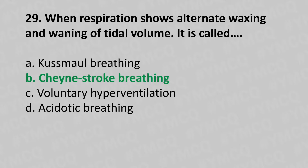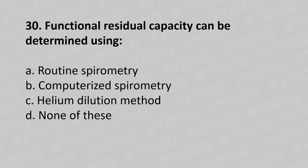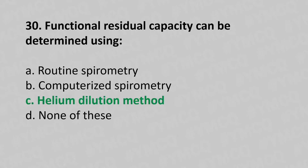Now let's move to question number 30. Functional residual capacity can be determined using. Option A: Routine spirometry. Option B: Computerized spirometry. Option C: Helium dilution method. Option D: None of these. And the answer is Option C, Helium dilution method.